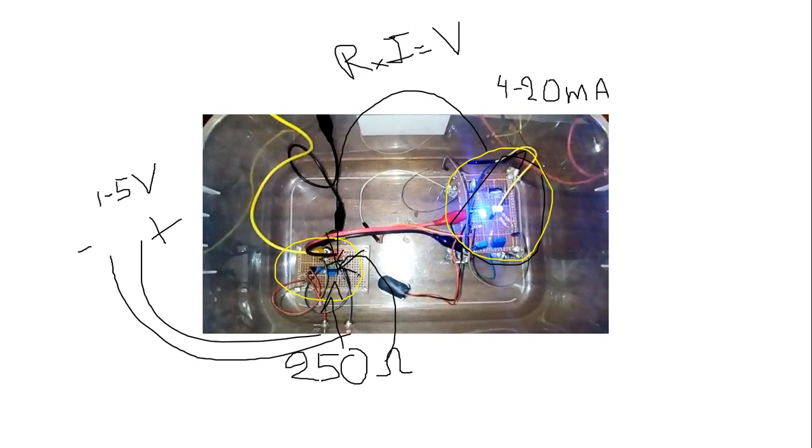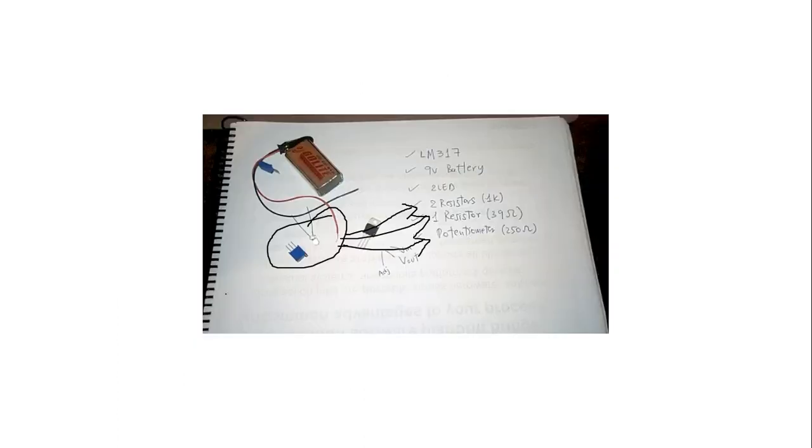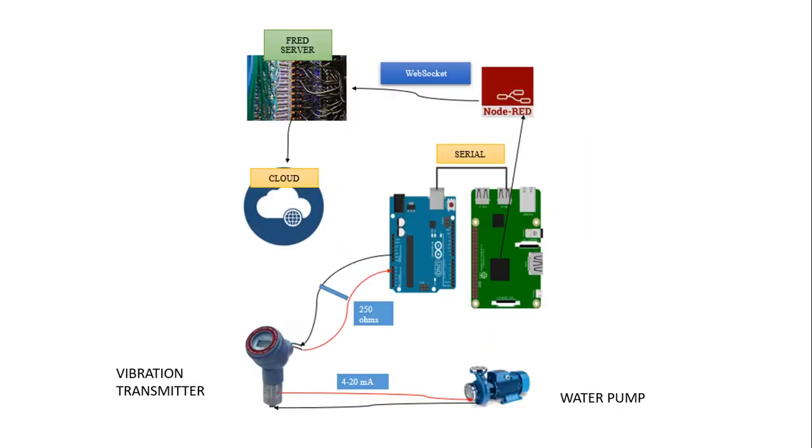Here we have our signal from 1 to 5 volts. This signal we are going to introduce into our Arduino, because our Arduino reads voltage analog signals. Then we are going to convert this analog signal into a digital signal.